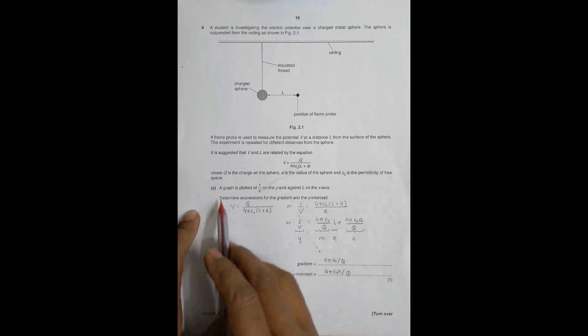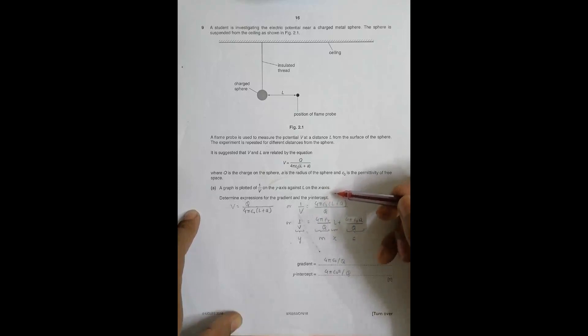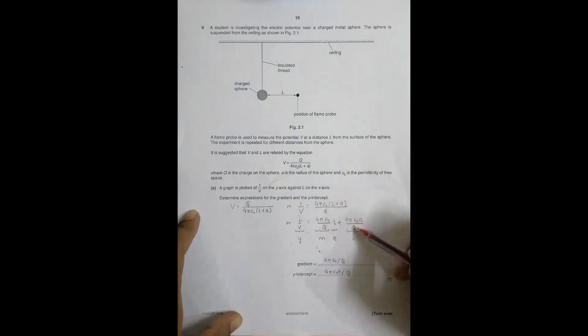Question (a) says: a graph is plotted of 1/V on the y-axis against L on the x-axis — find expressions for the gradient and the y-intercept. Taking the reciprocal of the equation gives 1/V = (4πε₀/Q)L + (4πε₀a/Q). Since L is on the x-axis, the gradient equals 4πε₀/Q, and the y-intercept equals 4πε₀a/Q.